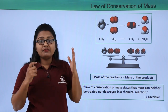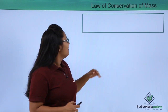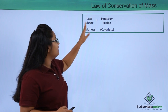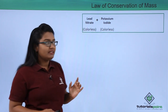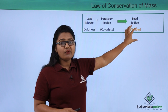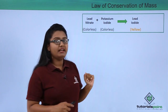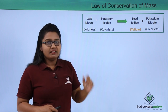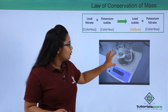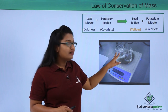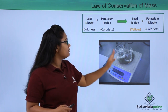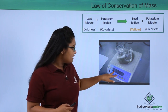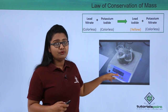Let us look at one more example. Two clear solutions — lead nitrate and potassium iodide — when combined result in a yellow-colored substance, lead iodide, and a clear substance, potassium nitrate. Two beakers containing these clear substances are weighed together and come out to be 157.42 grams.